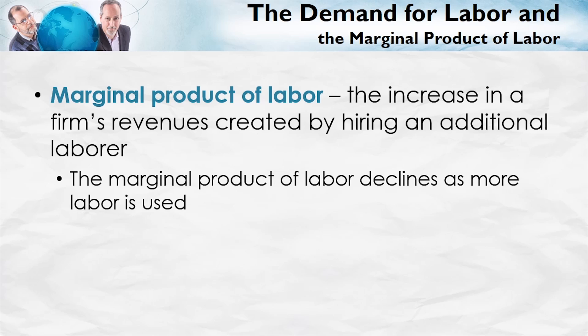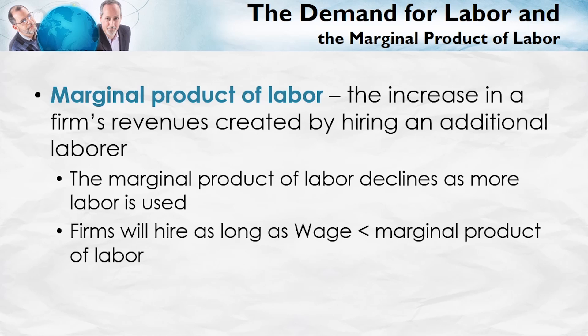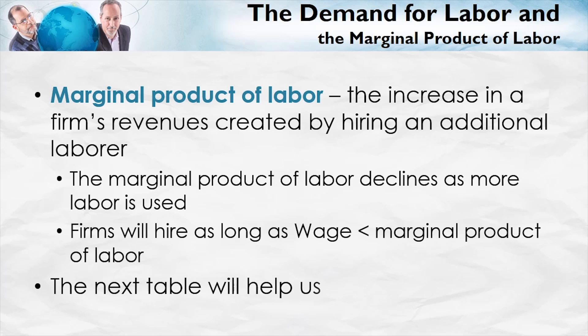The marginal product declines because the first laborer goes to the most important task, the second laborer goes to the second most important task, and so forth. Moreover, firms will hire laborers as long as the wage is less than the marginal product of labor. Let's take a look at this in a table.